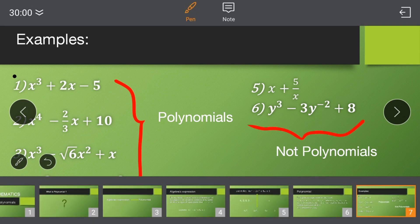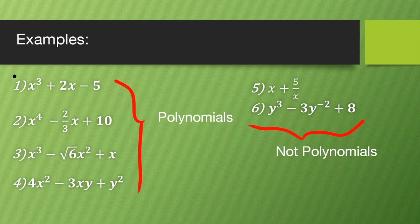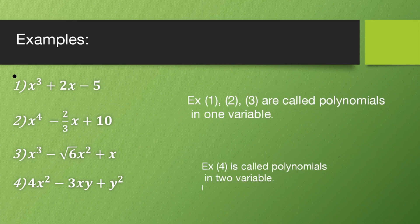Examples 1, 2, and 3 contain only a single variable x, so these are called single-variable polynomials. Example 4 contains two variables, x and y, so it is called a polynomial in two variables, or a polynomial in more than one variable.